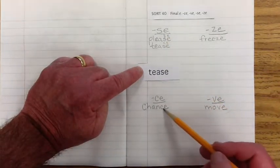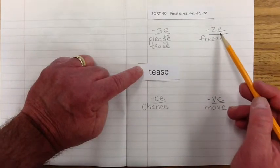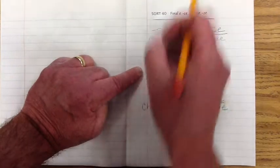Okay. This one has the S-Chance sound. Freeze. The Z sound. And this one has the V sound. Move. Move. Move. All right.